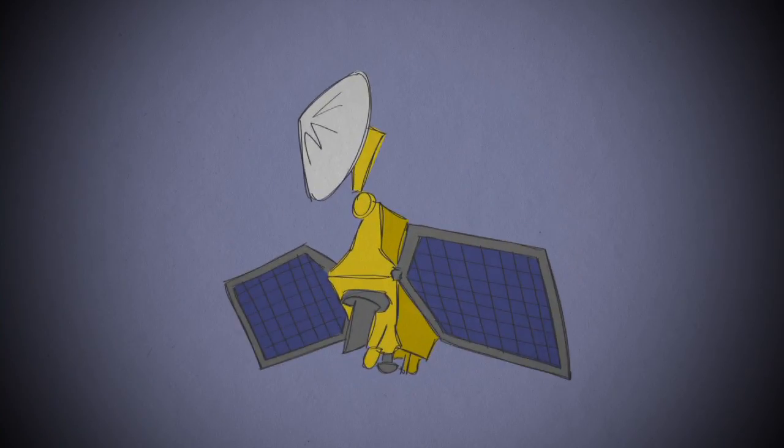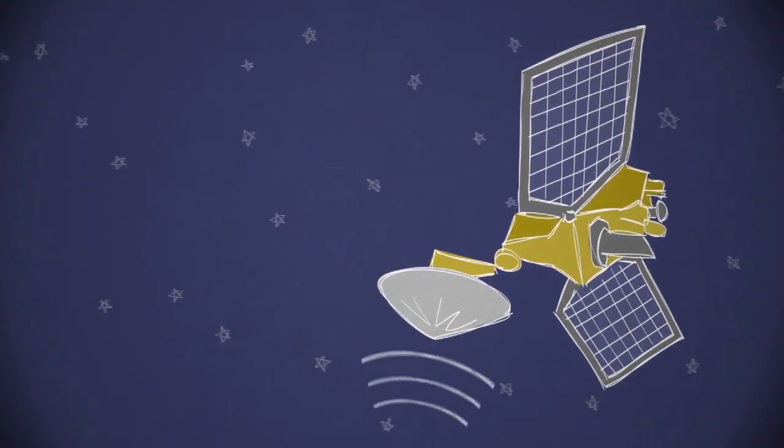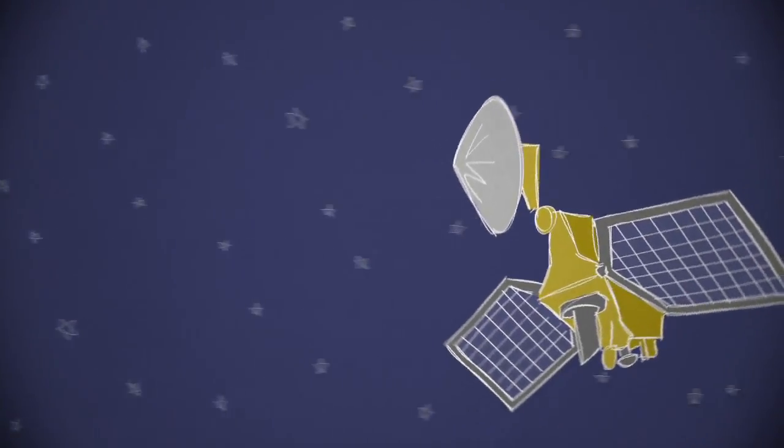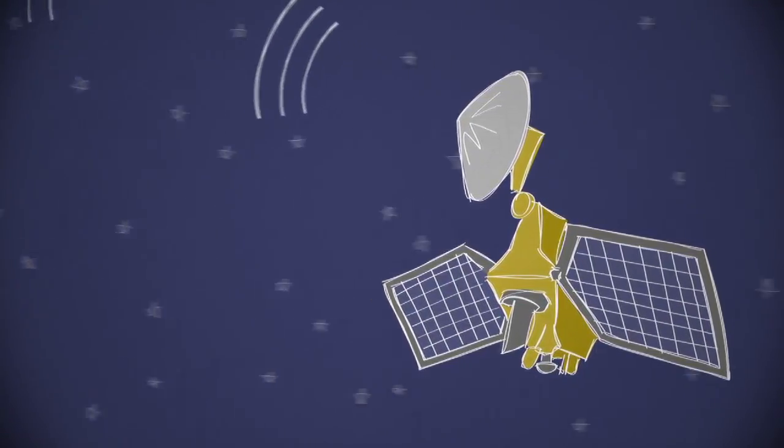So the Mars Reconnaissance Orbiter plays the role of backup. It will also fly overhead to capture what happens and then store the landing data it collects on board for playback to Earth a few hours later.